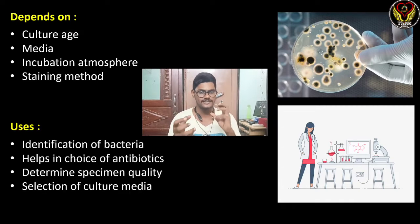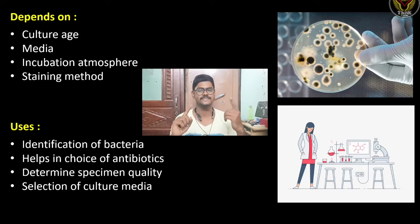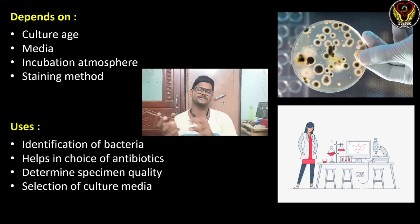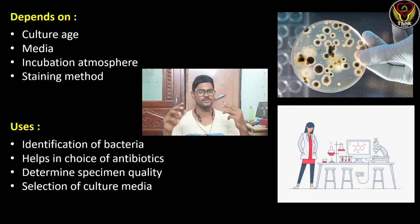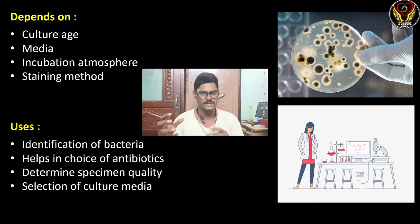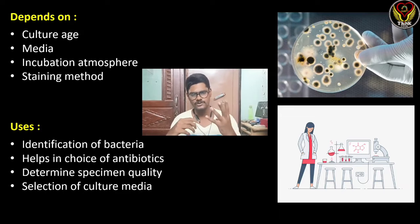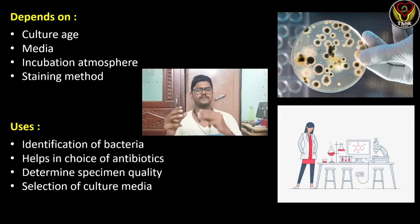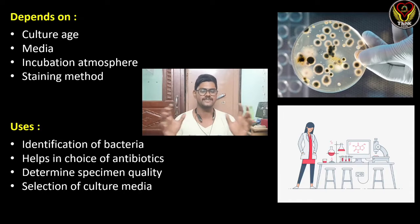There are factors which can influence the result of gram staining. First is culture age — if the bacteria being tested is too old, results may be different and won't clearly show gram positive or gram negative. Second is media — colonies taken from differential media may show different colors. Third is incubation atmosphere. Fourth is staining technique — some labs use 30 or 45 seconds for reagents, though the standard recommended time is one minute.